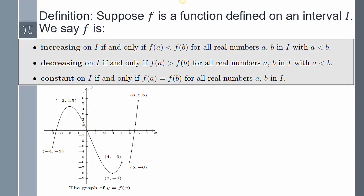Suppose f is a function defined on interval i. We say that it's increasing if and only if, looking at two y-values, as we move along from a to b — meaning a comes first and b is next — the value f(b) has to be larger than f(a). We say that it's decreasing if f(a) is going to be bigger than f(b).